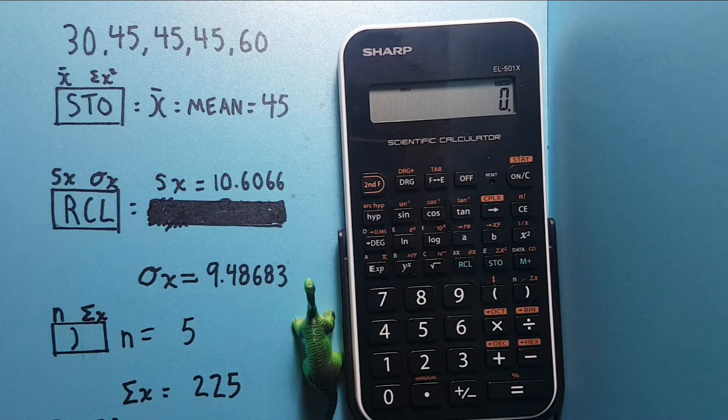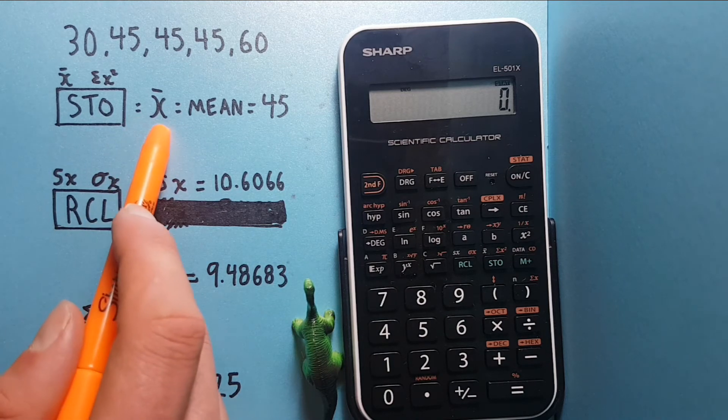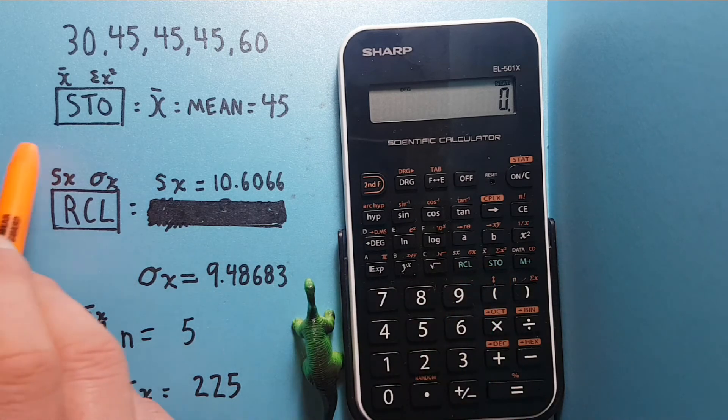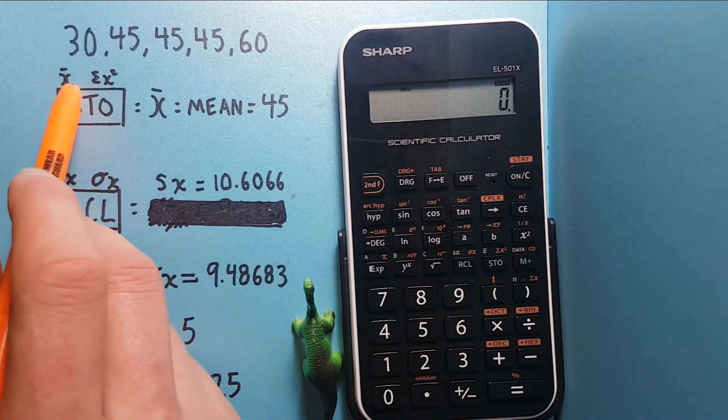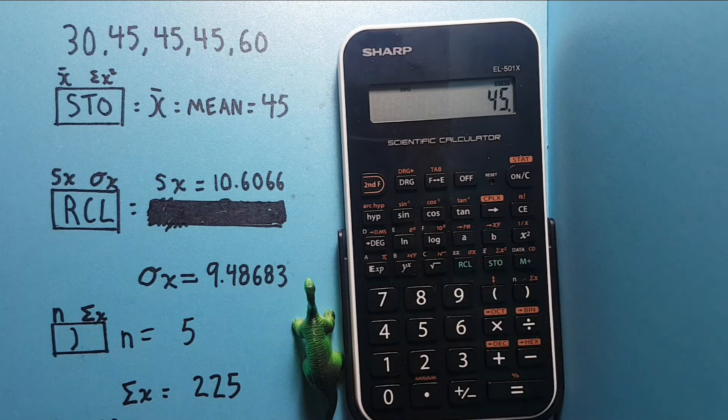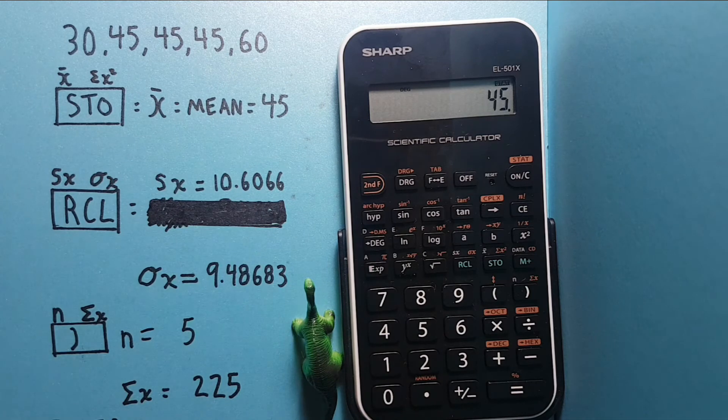The first thing we want to find is our mean, or the X bar. So to find that, we press this key here, the STO with the X bar on the top left hand side. And we get 45, which looking at the data set, we can tell already is the correct mean.